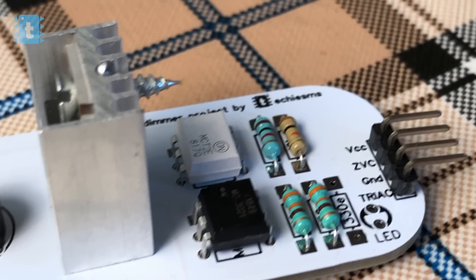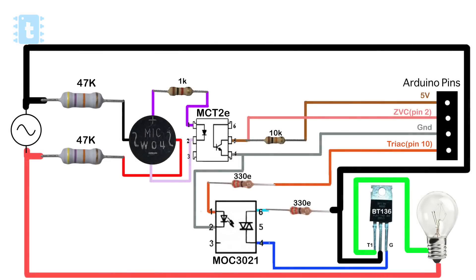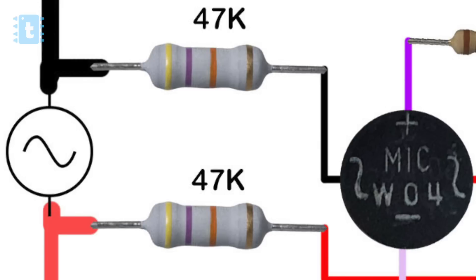Now before jumping into the code, let's first understand the working of the AC dimmer. First of all we have these big resistors at the power input which will limit the current coming from the source. Then we have attached a bridge rectifier whose output is attached to the optocoupler IC.